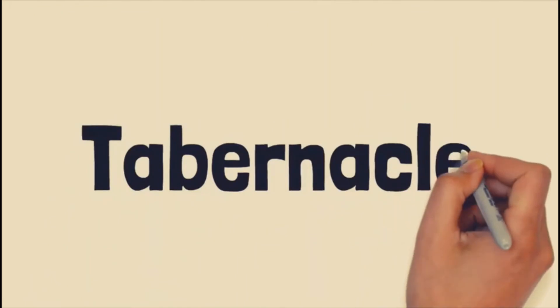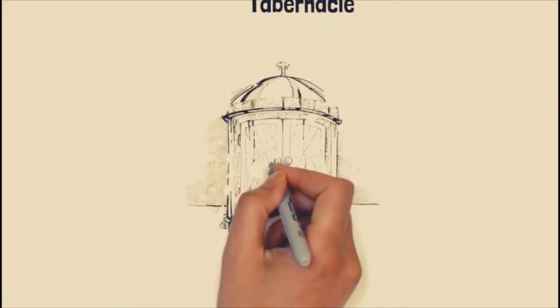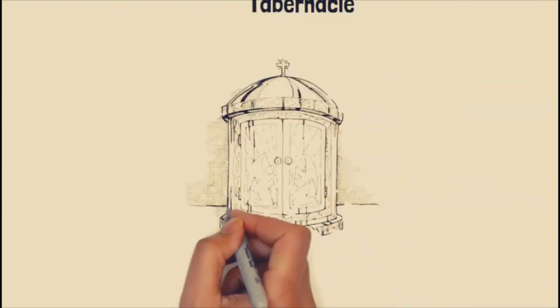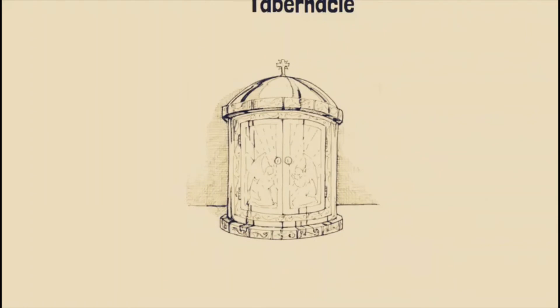The Tabernacle is a place where the Holy Eucharist is stored, usually for Holy Communion outside the Kurbana — usually for the sick and in instances of immediate danger. The Holy Eucharist is also stored for the purpose of adoration. It shows the continuous presence of Jesus in the Holy Eucharist. — Gospel of St. Matthew, Chapter 28, Verse 20.